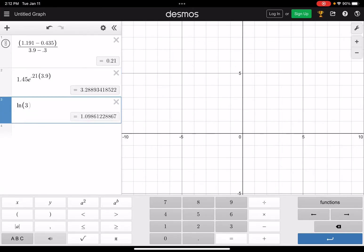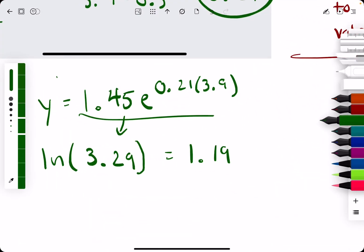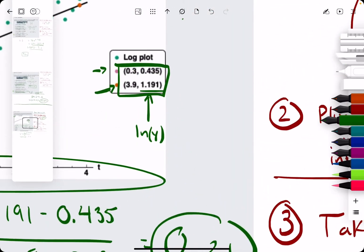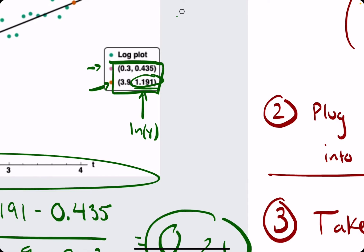Because what we just found was a y value. So we want to now find natural log of a y value. And that gives us approximately 1.19,